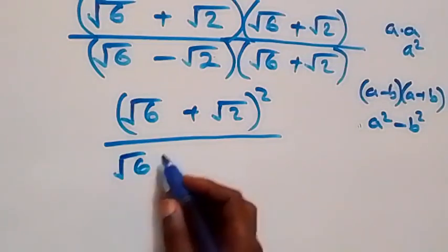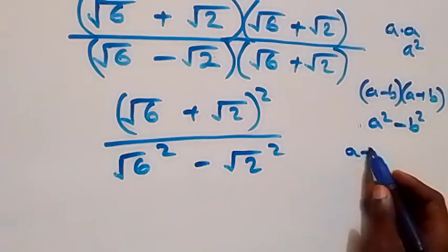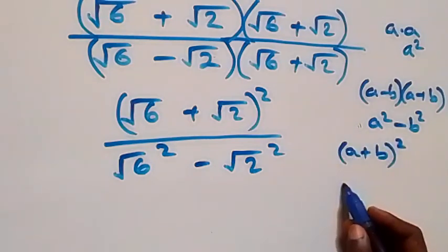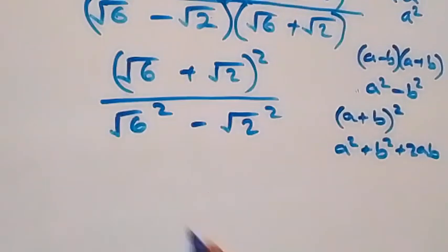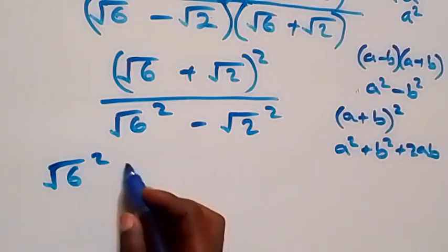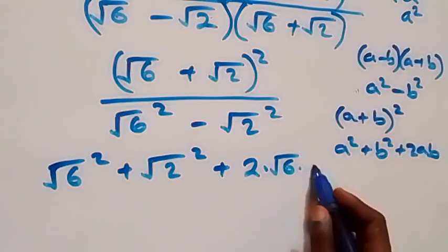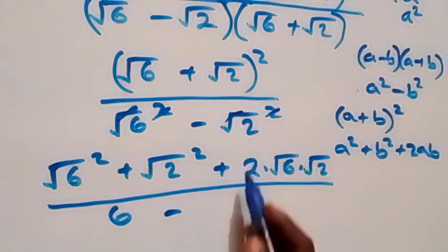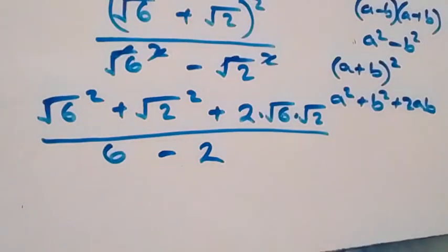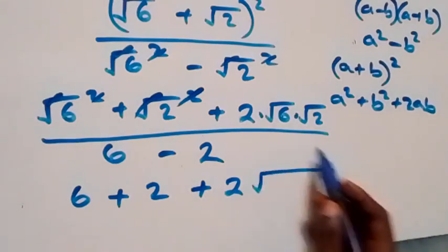The numerator expansion uses (a + b)² = a² + b² + 2ab. This gives us root 6 squared plus root 2 squared plus 2 times root 6 times root 2. The denominator gives root 6 squared minus root 2 squared. Simplifying: square cancels square root, giving 6 plus 2 plus 2 root 12, all divided by 6 minus 2.